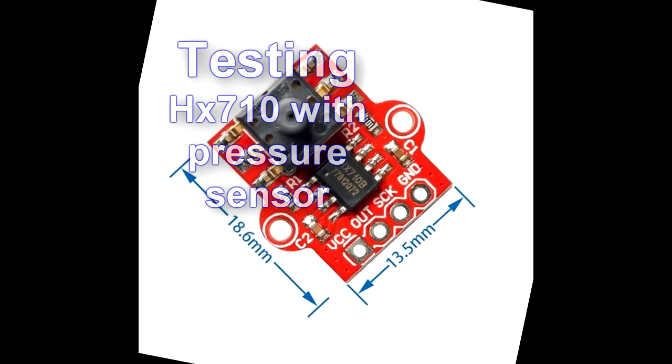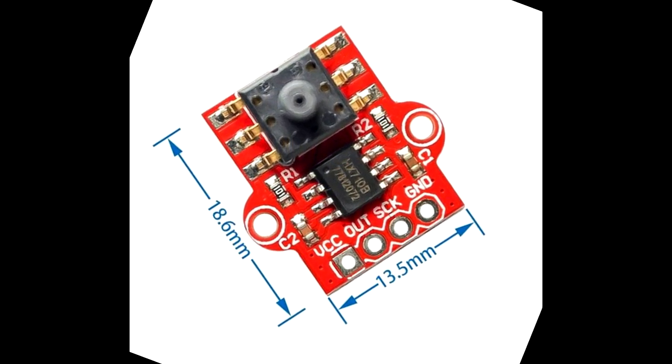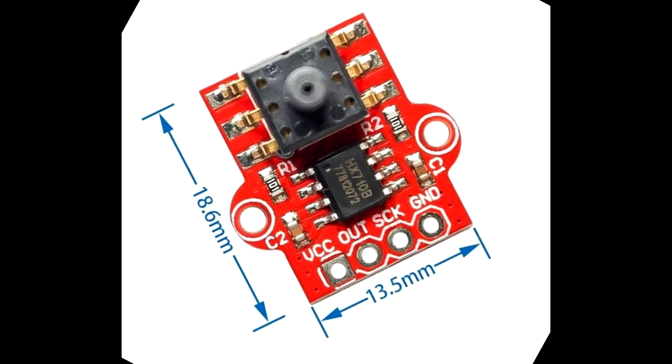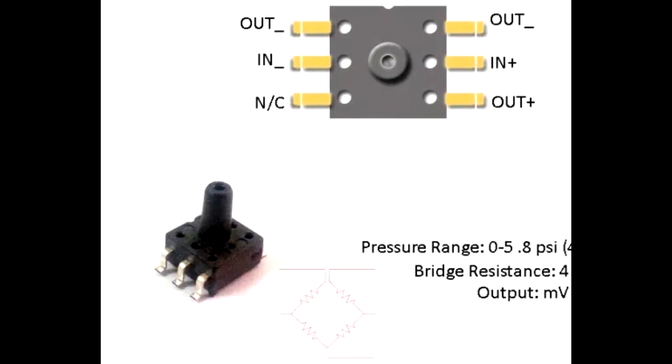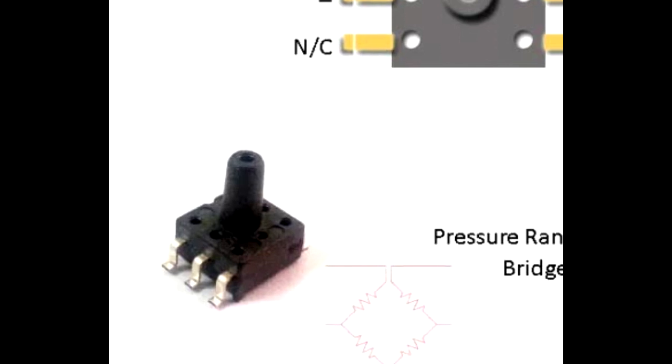Module HX710B is a 24-bit analog to digital converter with built-in temperature sensor. It's designed for waste scales and industrial control applications to interface directly with a bridge sensor. In this module, the HX710B is connected to MPS20N40DS pressure sensor.